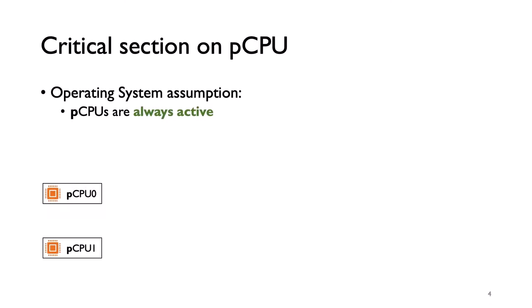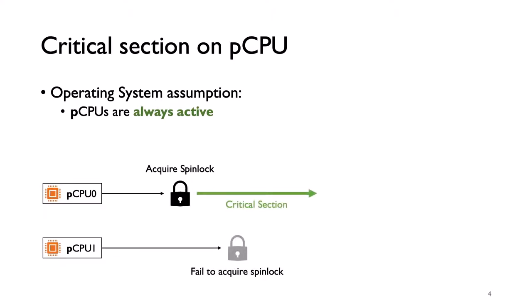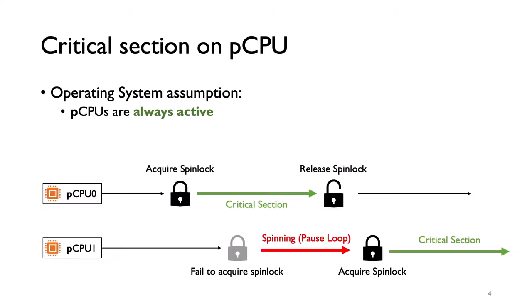For example, lock-holder preemption is one of the famous problems which incurs excessive spinning. Let's suppose an ordinary case of spinlock synchronization. Two physical CPUs need to acquire a spinlock. If CPU0 has already acquired the spinlock, CPU1 fails to acquire the lock and it will spin until CPU0 releases the lock. After CPU0 releases the lock, CPU1 can acquire the lock and executes the critical section. Since physical CPUs are always active, the busy waiting is always short. The operating system assumes physical CPUs are always active and the spinlock synchronization works efficiently.